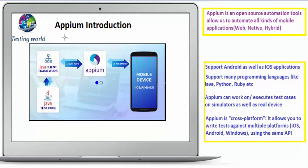One tool is APM, which we are going to cover in this session. We have many other tools as well — one is CTest, one is Calabash. So we have multiple tools which we can use for mobile application automation testing, and in this session we are going to cover APM.